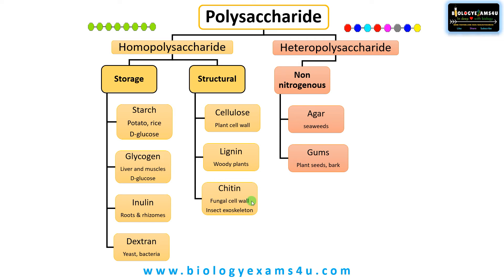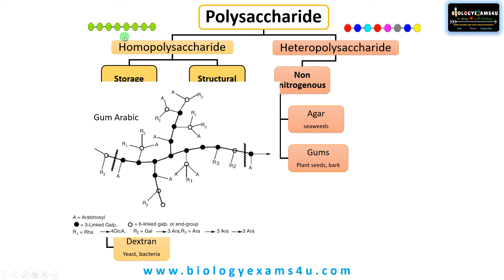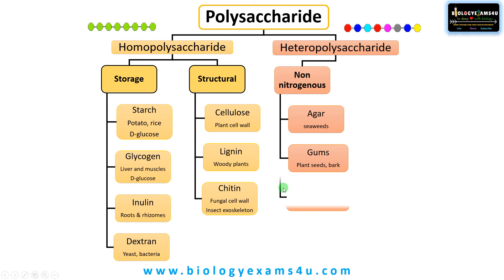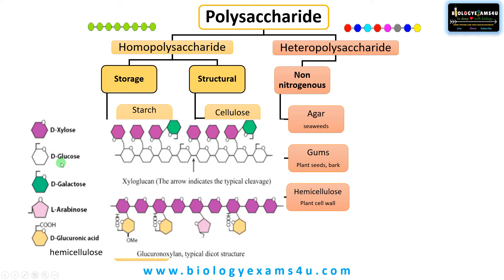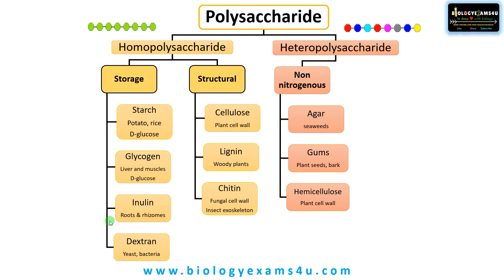The next non-nitrogenous heteropolysaccharides are gums — diverse heteropolysaccharides extracted from plant seeds and bark. For example, acacia produces gum arabica. Their composition varies but typically includes a mix of monosaccharides like galactose, arabinose, rhamnose, etc. Hemicellulose is another heteropolysaccharide formed by five or six types of monosaccharide units including xylose, glucose, galactose, arabinose, and glucuronic acid. It acts like a glue binding cellulose fibers together, providing additional strength and rigidity to plant tissues, and is also a component of the plant cell wall.